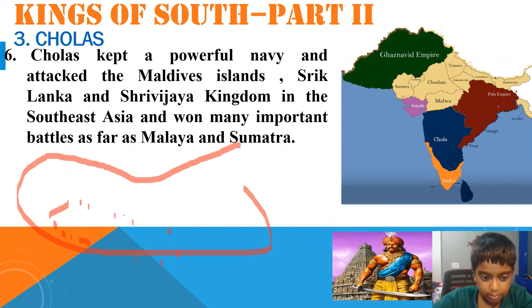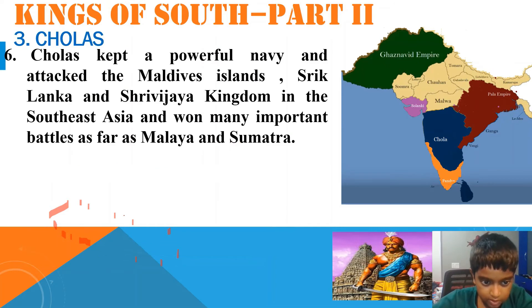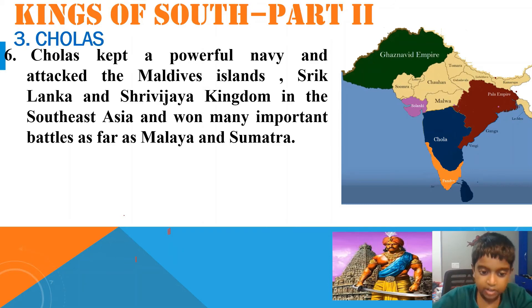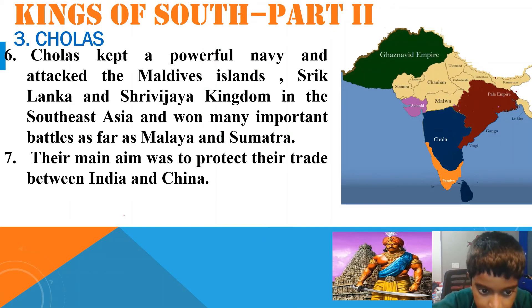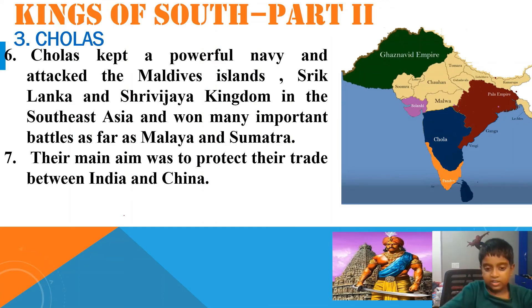Chola captured Mali island and Sumatra islands in Java. Their main aim was to protect their trade between India and China — that was the main aim of the Chola dynasty.